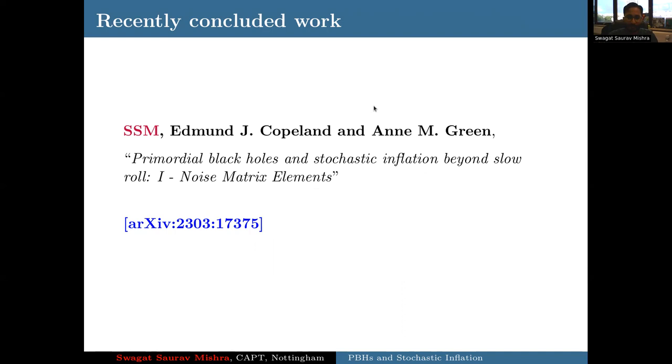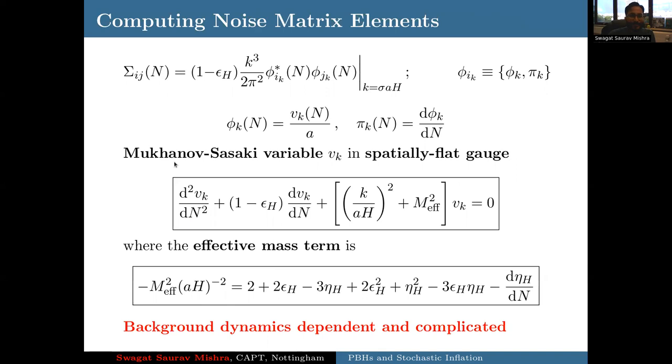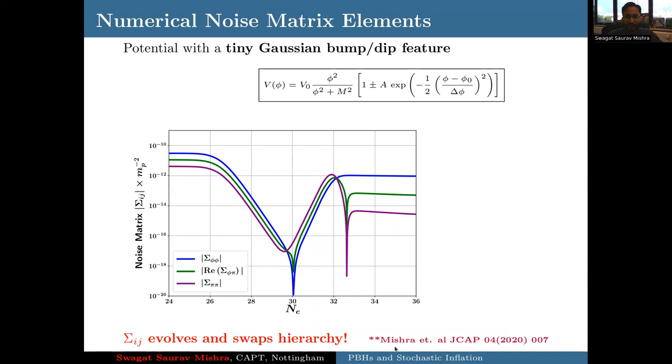The way you compute noise terms is, again, go to this Mukhanov-Sasaki variable V. It's related to field and its momentum fluctuations. You solve again the Mukhanov-Sasaki equation. If I remind you that there was this mass term, which is complicated and background dependent, but you can do it numerically. We did it numerically for a bump dip type feature taken from this paper. We saw that the noise, the field noise, which is in blue color, is not constant. It is evolving as a function of time. Similarly, the momentum dependent noise terms are not negligible. They are comparable to the field noise. When you go from the CMB scale slow roll to the next ultra slow roll, the momentum dependent terms become more significant. They all fall and they again change hierarchy and then go back. So the noise behavior is very complicated.